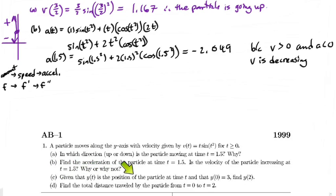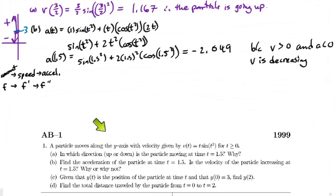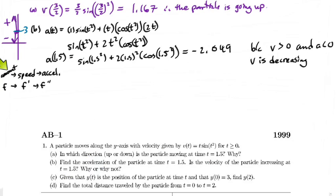The next question says: given that y(t) is the position of the particle at time t and y(0) = 3, find y(2). y(0) is where the particle is starting — it's starting at 3. When you think about position, that's the anti-derivative of velocity, because the anti-derivative of velocity gives you the amount the particle has traveled. But we're starting at 3, so just integrating won't give us the position directly.